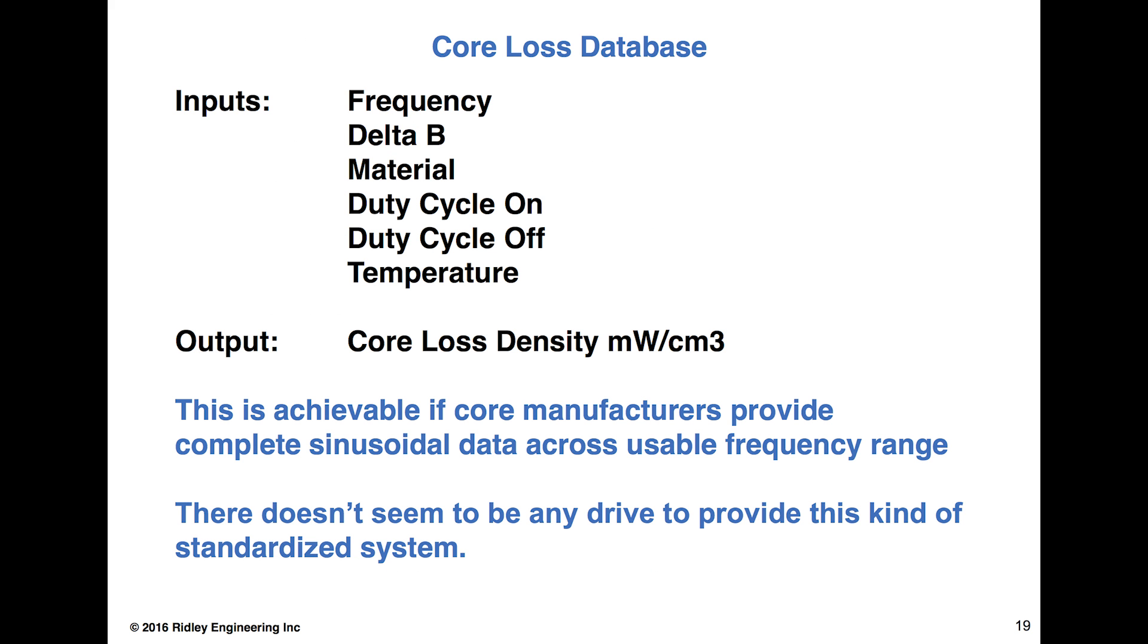I'd like to see a core loss database from all the manufacturers where, if they want to play, what you do is you feed in delta B, frequency, material, the duty cycle on, the duty cycle off, and the temperature, and it would just drop out the core loss density. This would save us all as designers so much time from slugging through all these different curves, trying to find the curves and trying to expand them so we can read them. But I don't see any big drive to provide this kind of standardized system, but hopefully during the next year when we talk about all these issues with PSMA, there can be some progress in the area.